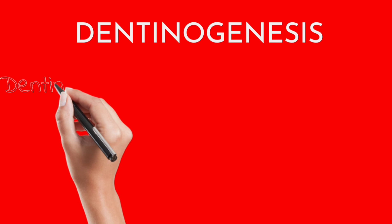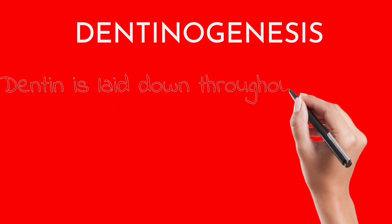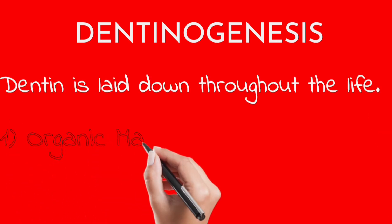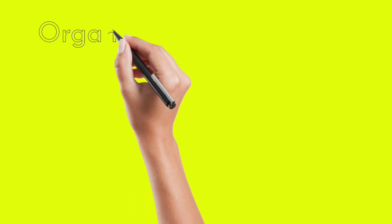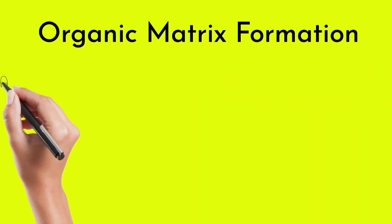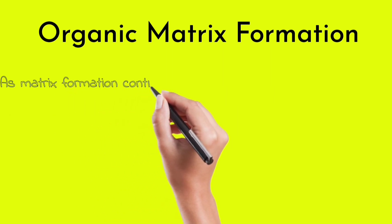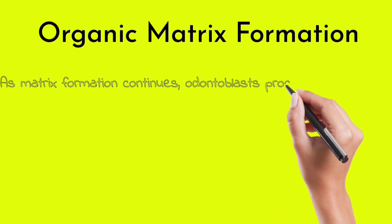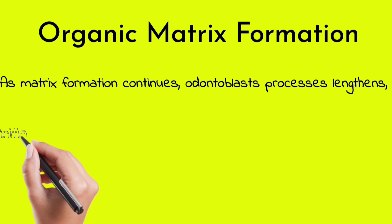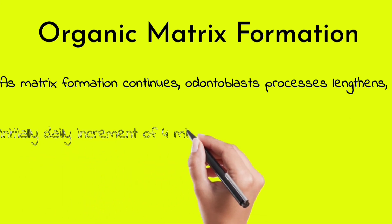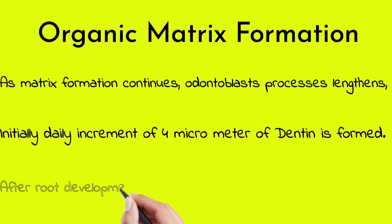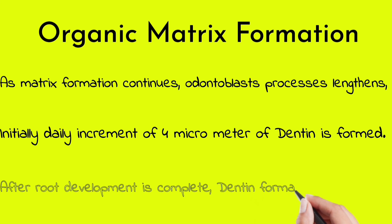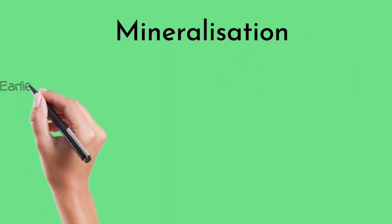Dentinogenesis has mainly two stages: organic matrix formation and mineralization. Dentine is laid down throughout life. During matrix formation, as the matrix formation continues, the odontoblast processes lengthen. Initially a daily increment of four micrometers of dentine is formed, but after root development is complete, dentin formation decreases.